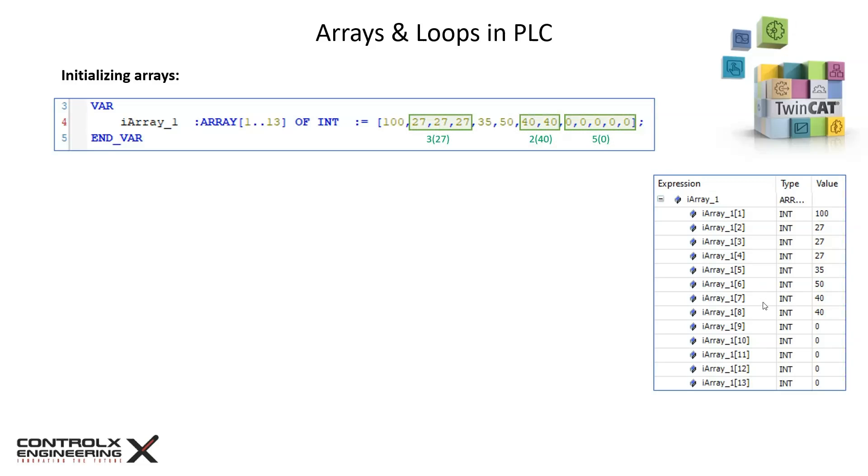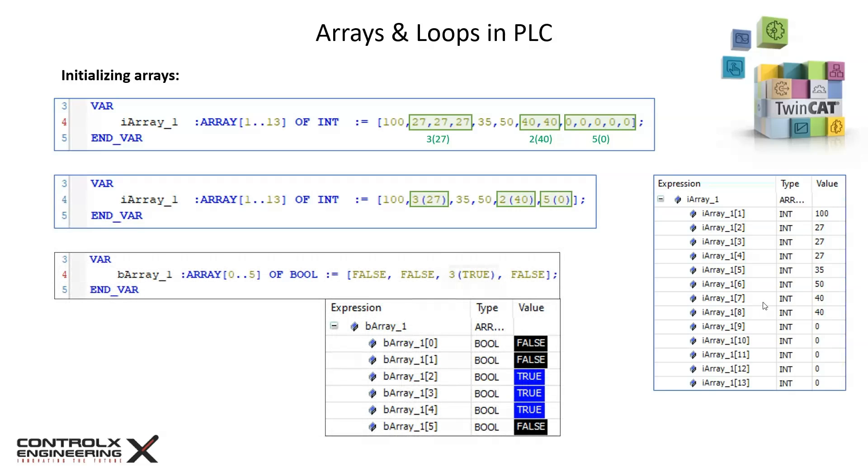Some elements in the array are repeating. There are three 27s, two 40s, and five zeros. Here's an alternative way of initializing the exact same array with repeating consecutive numbers.